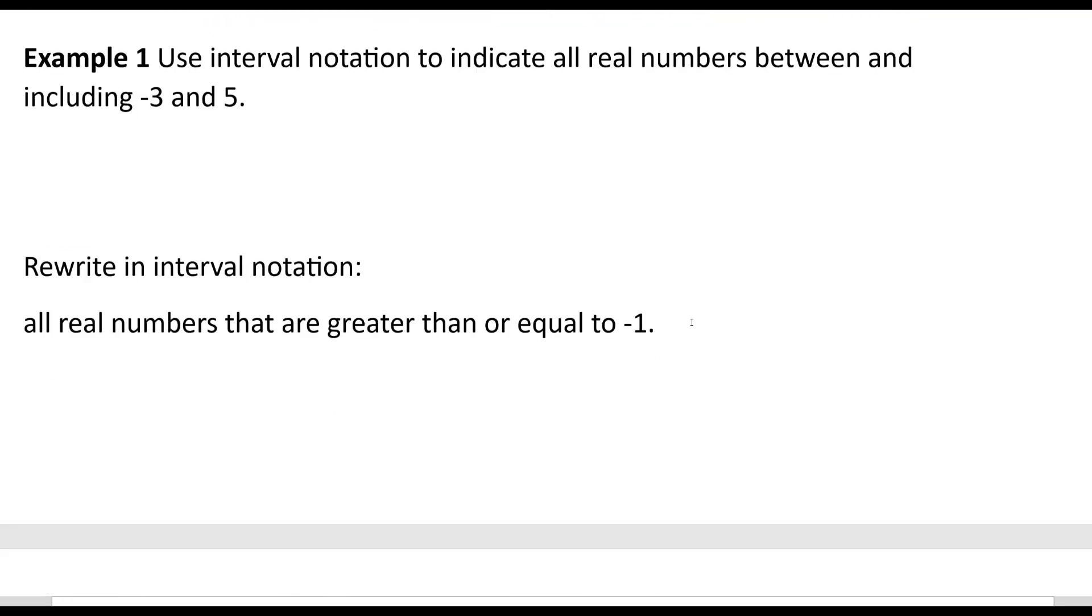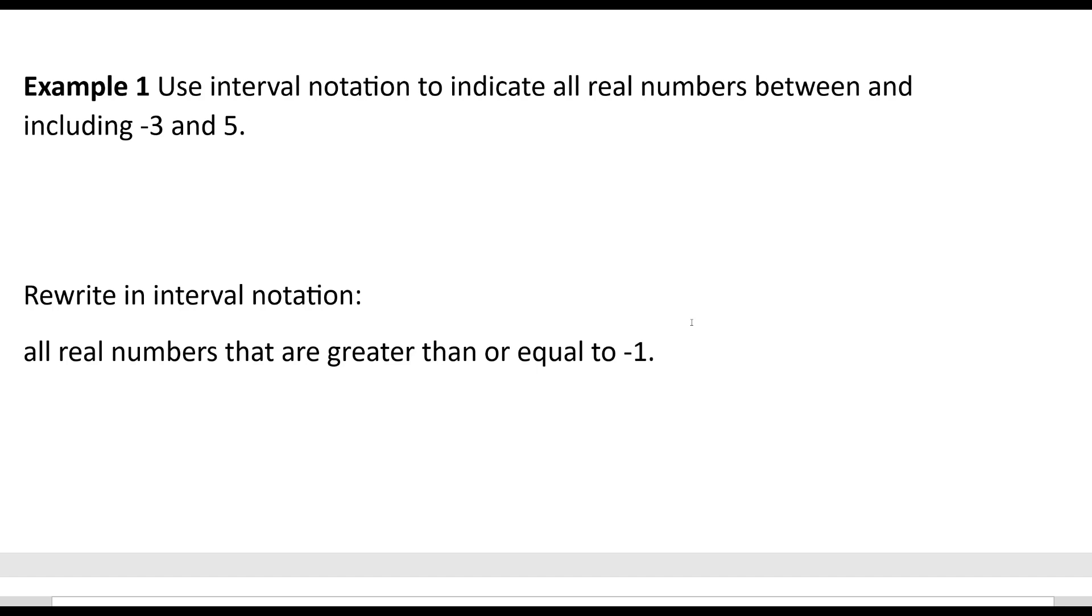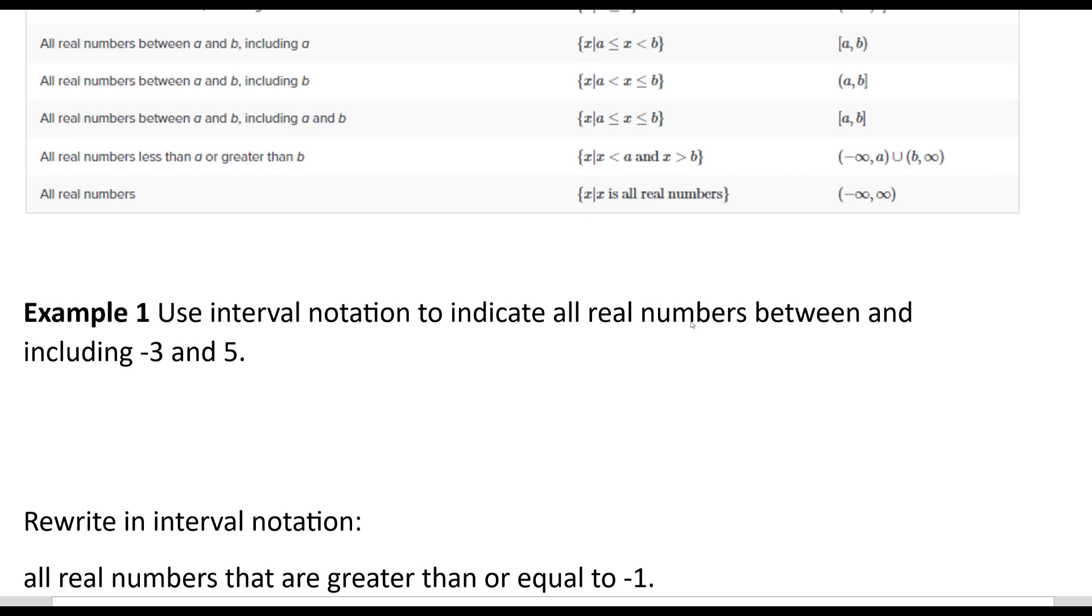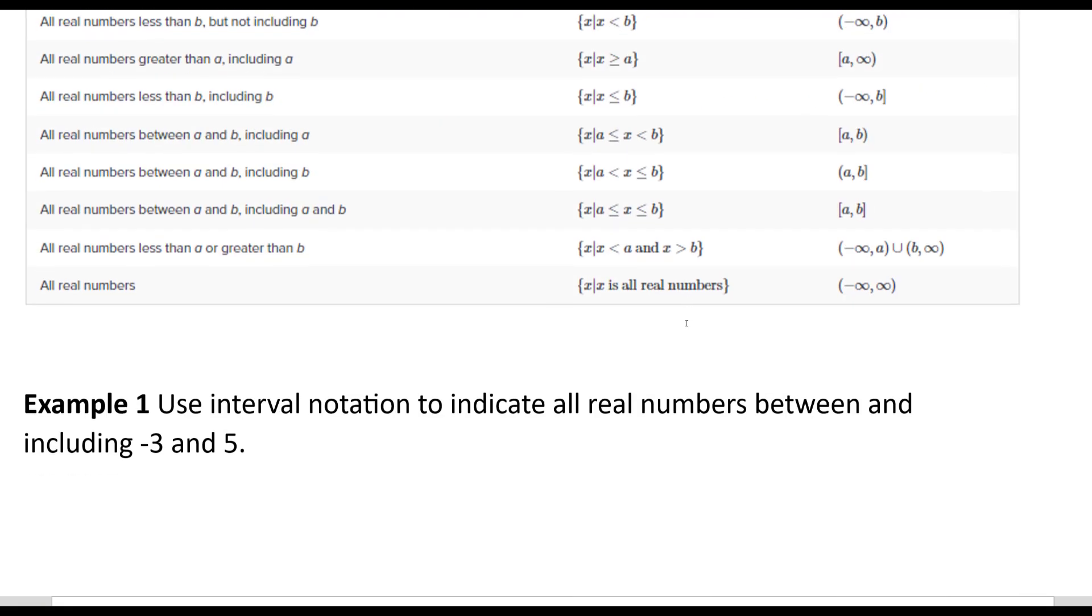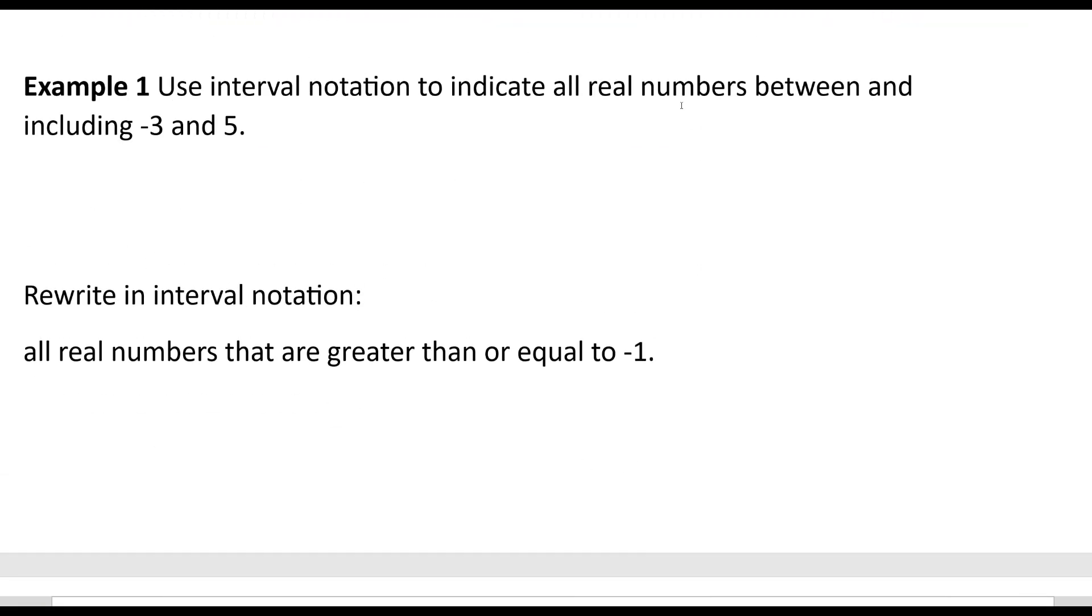So it says use interval notation to indicate all real numbers between negative 3 and 5. So in set-builder notation - let me just see. Okay, I just said interval, so we'll just do it with interval. Between negative 3 and 5, so it didn't say it's inclusive of them. So it would say parenthesis negative 3 comma 5.